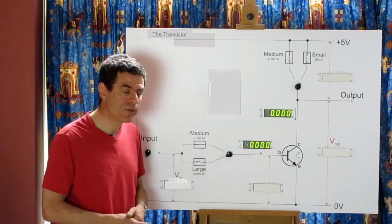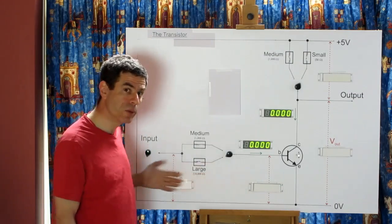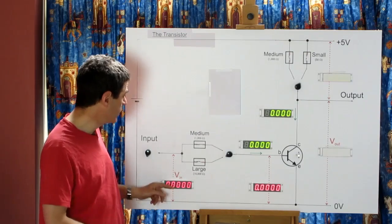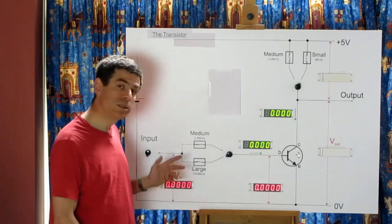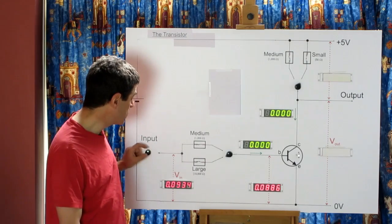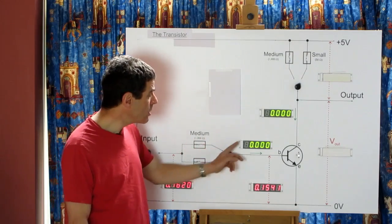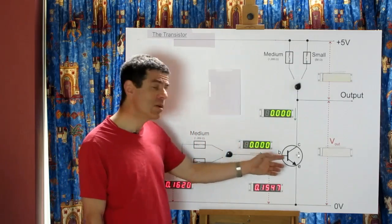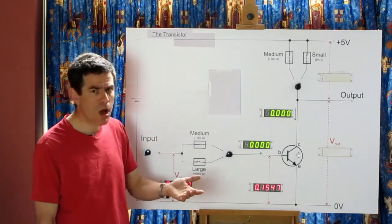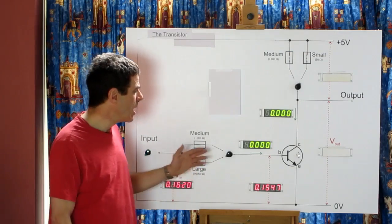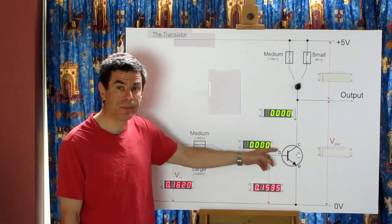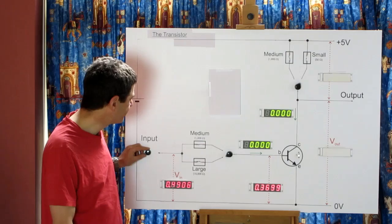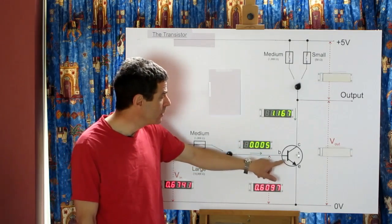Now it's volts which make current flow, so let's see what's happening with the voltages. We're going to start on the input side. This meter is measuring the voltage at the base of the transistor, and this meter is measuring the control voltage I'm supplying. Starting with a small voltage, no current is flowing and this voltage is much the same as the control voltage — because this kind of transistor needs just around half a volt before it wakes up and takes an interest. So until that happens, it's not allowing any current to flow.